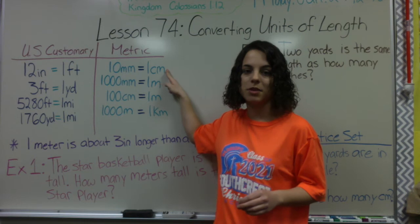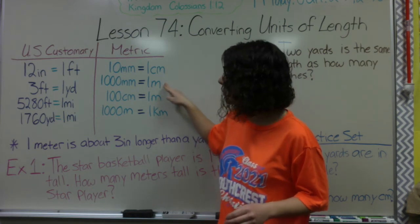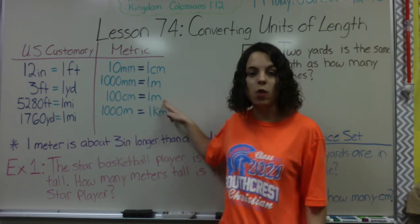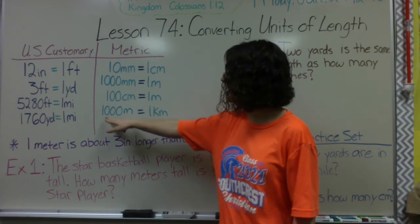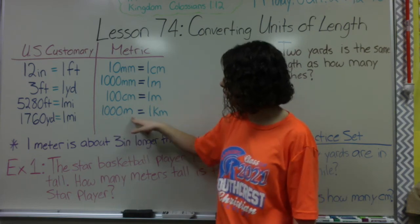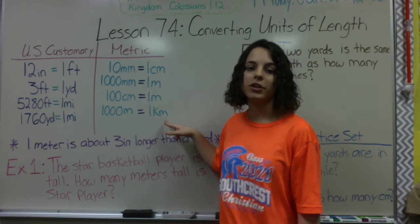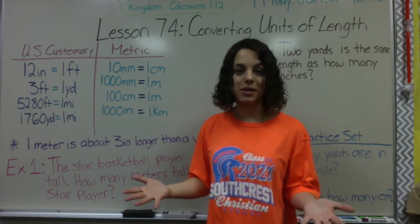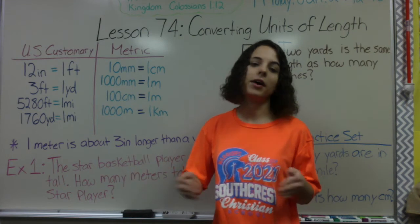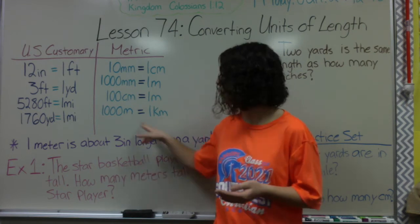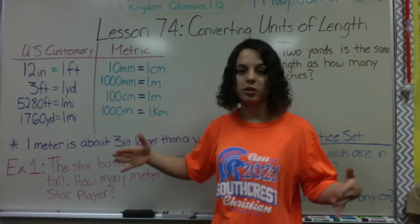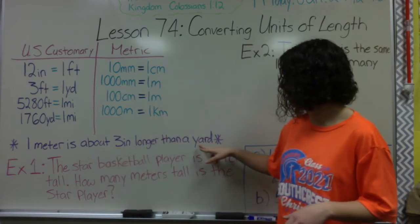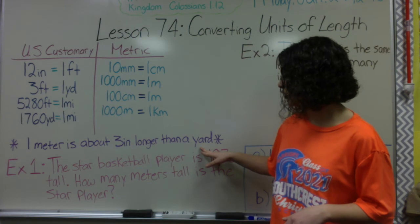10 millimeters equals 1 centimeter. 1,000 millimeters are in 1 meter — like our meter stick that we have in class. 100 centimeters is 1 meter, and 1,000 meters equals 1 kilometer. So whenever you see kilometers per hour in your car, that's because everywhere outside the US measures speed in kilometers. 1,000 meter sticks end-to-end equals 1 kilometer.